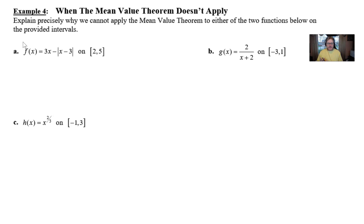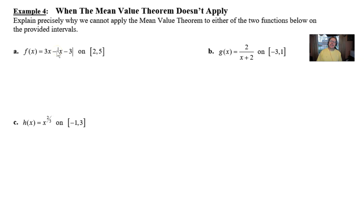Looking at part A: f(x) = 3x minus the absolute value of x minus 3 on the interval [2, 5]. You need confidence with parent curves — 3x is a continuous function, and the absolute value of x minus 3 is a continuous function. Subtracting those two still gives you a continuous function. So the problem isn't that f(x) isn't continuous; the problem is that f(x) is not differentiable, because absolute value graphs are notorious for having that v-shape with a sharp turn at the bottom.